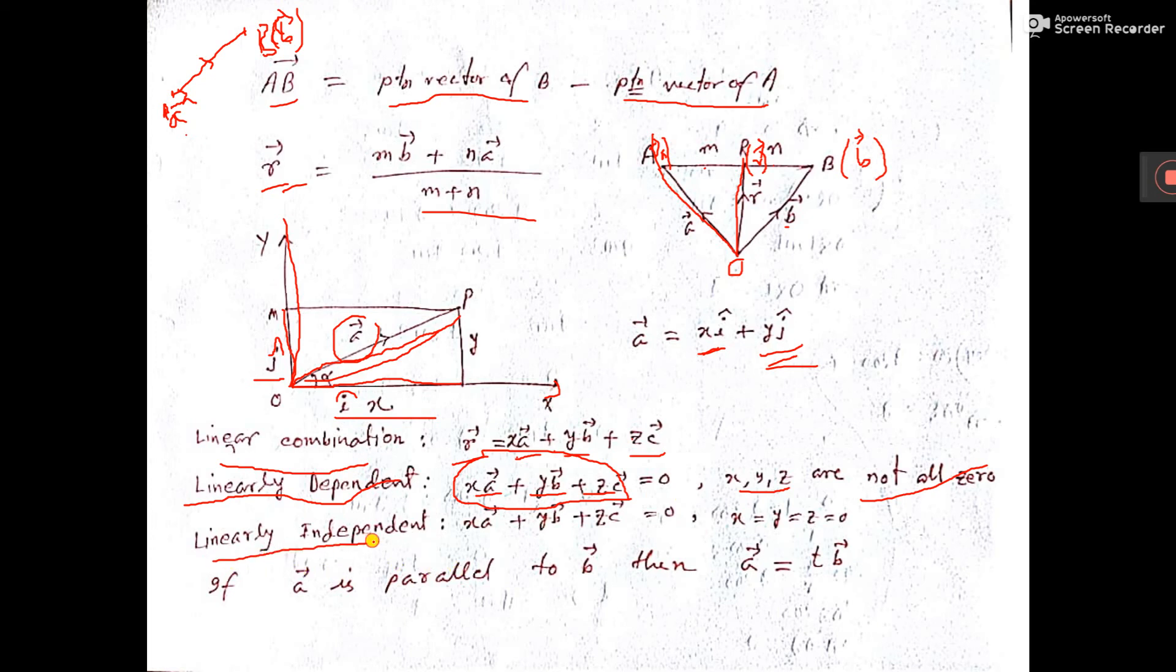Now, linearly independent means x a plus y b plus z c equal to 0, where both x and y and z are 0. So, this is the difference between linearly dependent and linearly independent.